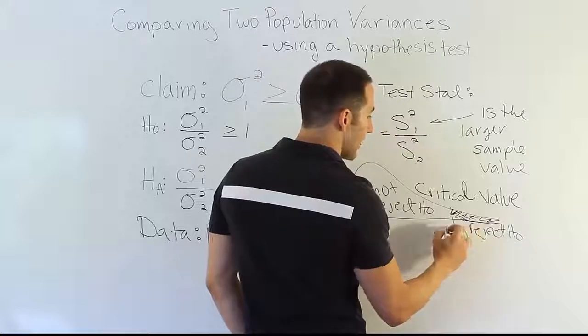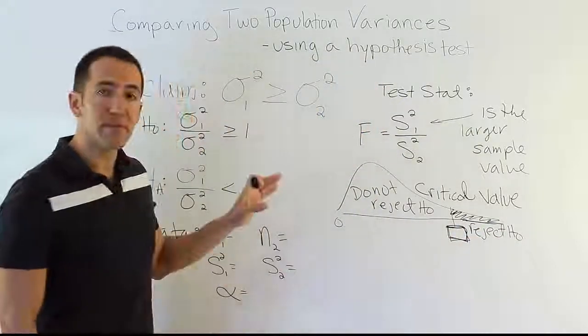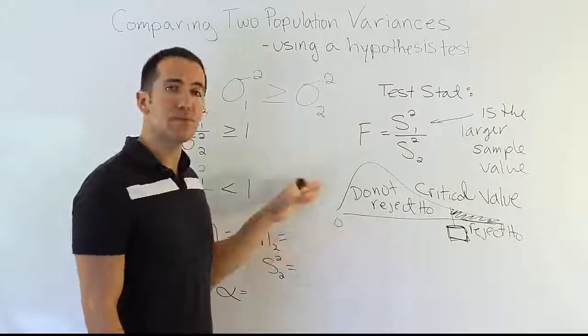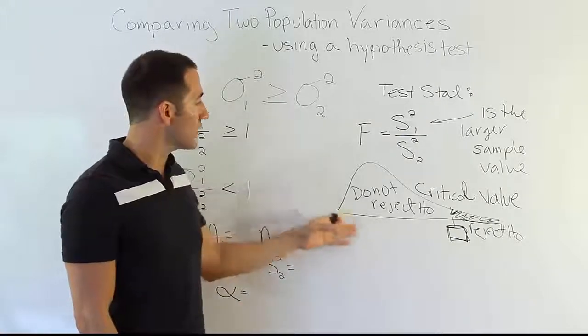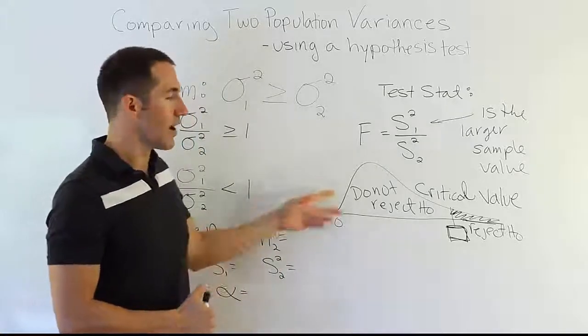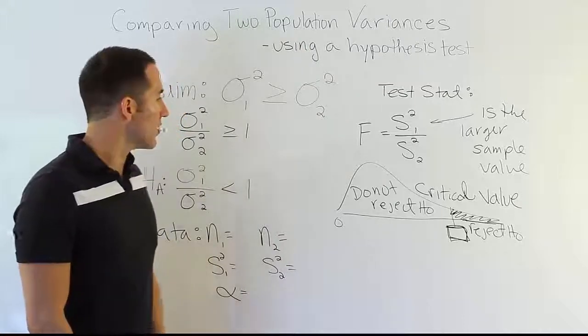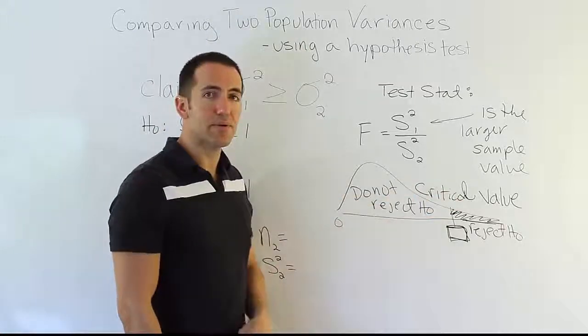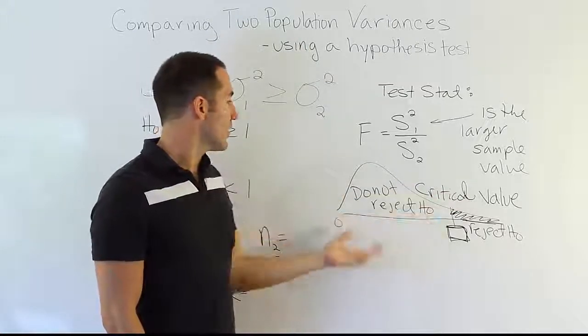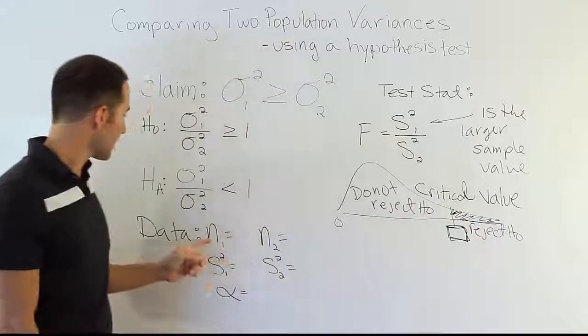So that critical value, that critical number is something we need to learn how to find. Now, it comes from the F-distribution, so you do not know how to do that yet. We are going to learn how to do that in the smaller problem videos. So you'll see, we work out several of those, so you know how to find that critical F-value. But the important thing is we're going to get it from an F-table, which is going to be found in your textbook. You're going to look up the critical value based on the alpha and based on these two sample sizes here.